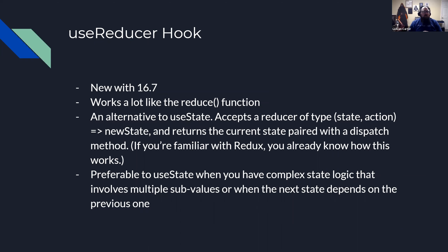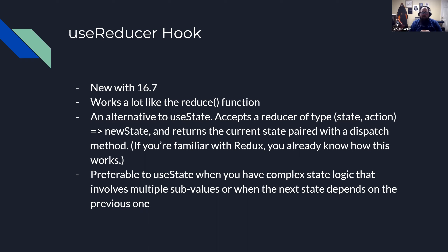The useReducer hook works a lot like a reduce function, where you have an accumulator and a current value that reduces down to what you return. It's an alternative to useState — it accepts a reducer function that takes state and an action and returns new state. It returns the current state paired with a dispatch method, similar to Redux. It's preferable to useState when you have complex state logic involving multiple sub-values, or when the next state depends on the previous one.